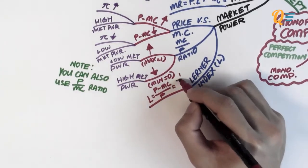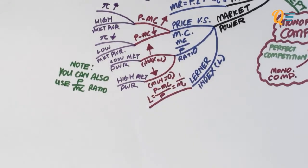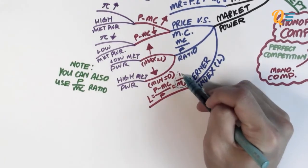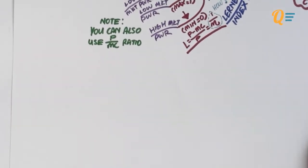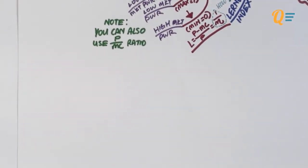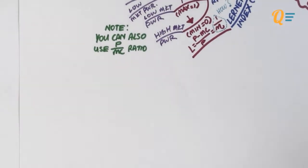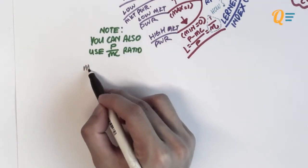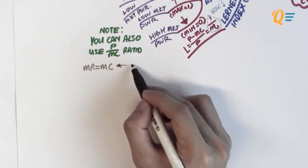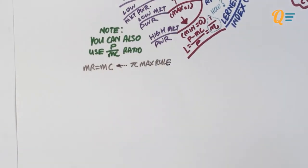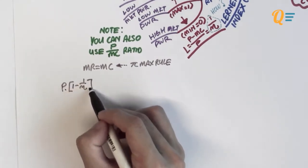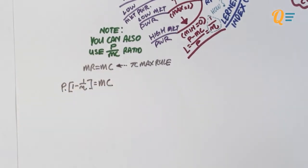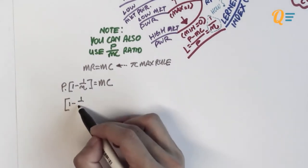The Lerner's Index is calculated as: price minus marginal cost over price, and this can be summarized as 1 over the price elasticity of demand. At Quickenomics, we believe that learning how to derive formulas helps us understand models better. So let's take MR equals to MC — the profit maximization rule — and we know that marginal revenue can be calculated with the formula from before. This formula can be expanded as shown, and dividing both sides by P gives us something familiar: the marginal cost to price ratio is incorporated into this formula.